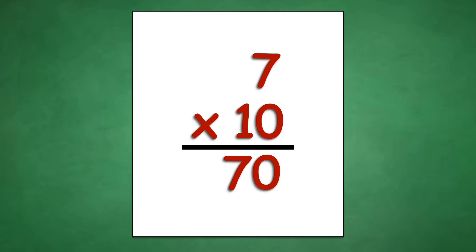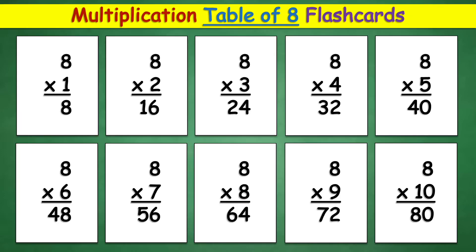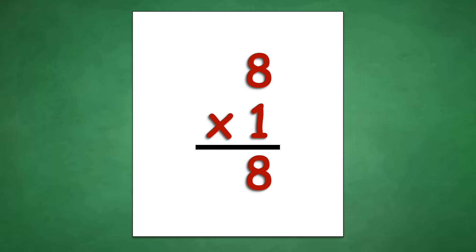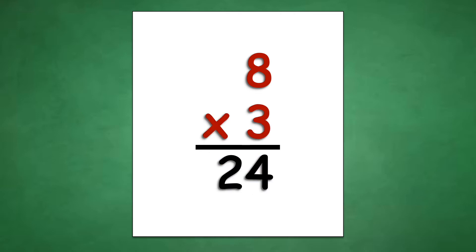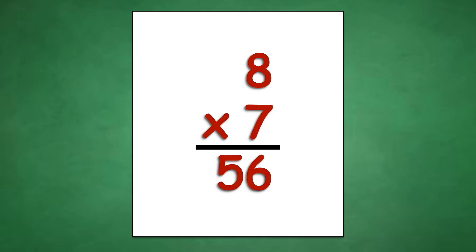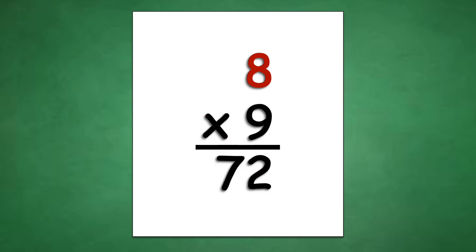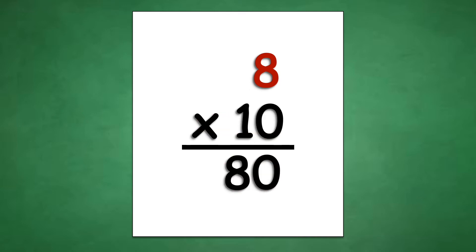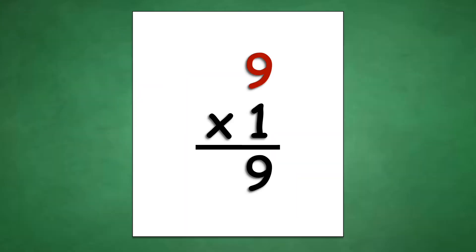7 times 10 equals 70. Table of 8: 8 times 1 equals 8, 8 times 2 equals 16, 8 times 3 equals 24, 8 times 4 equals 32, 8 times 5 equals 40, 8 times 6 equals 48, 8 times 7 equals 56, 8 times 8 equals 64, 8 times 9 equals 72, 8 times 10 equals 80.